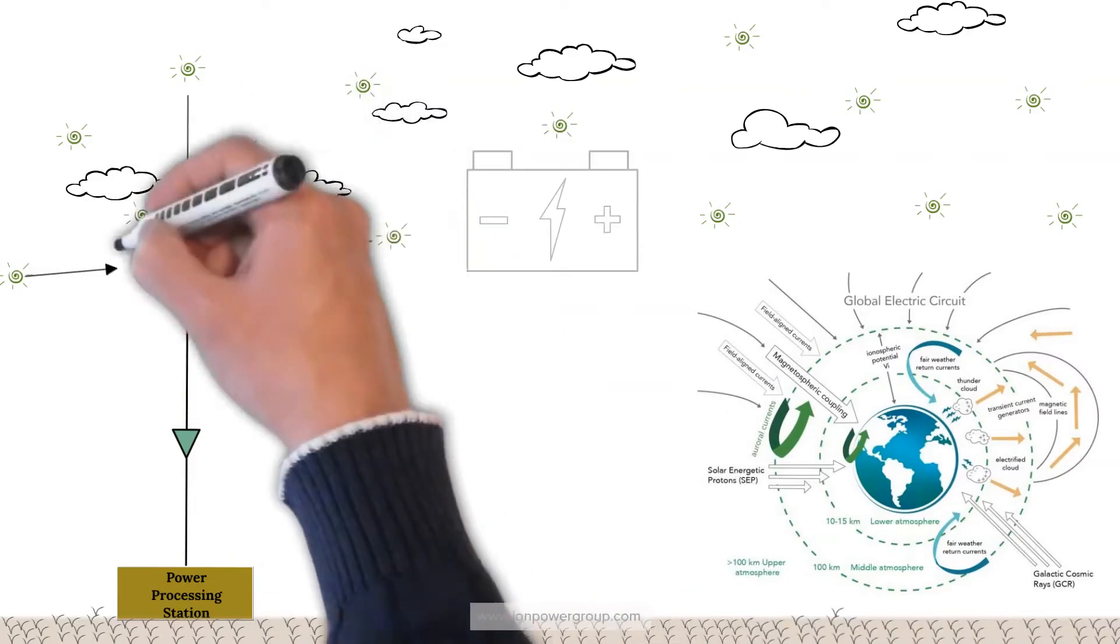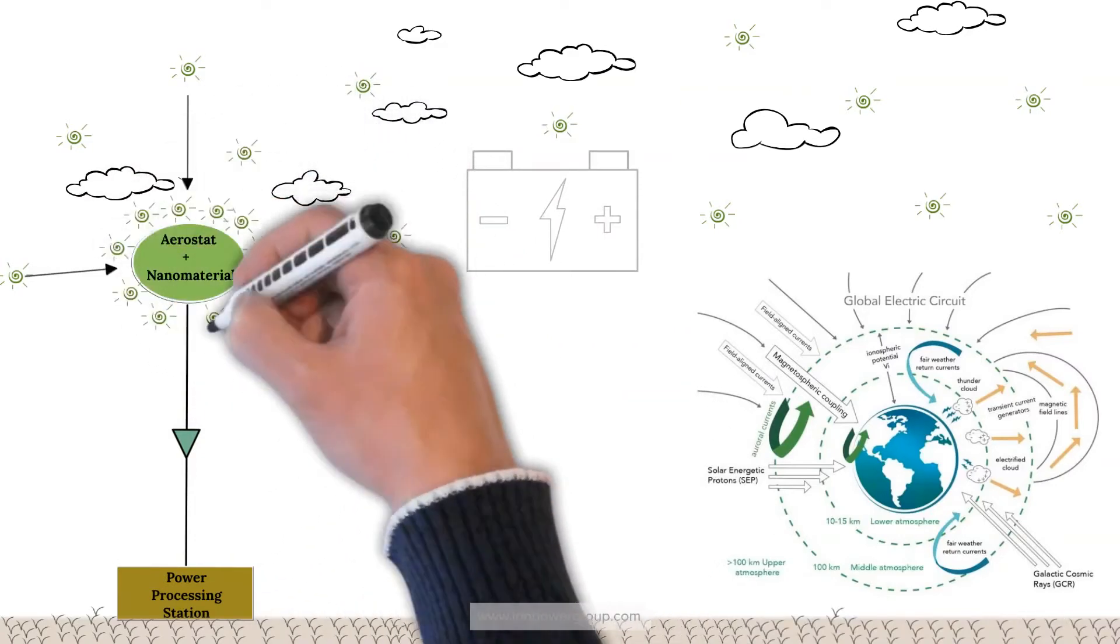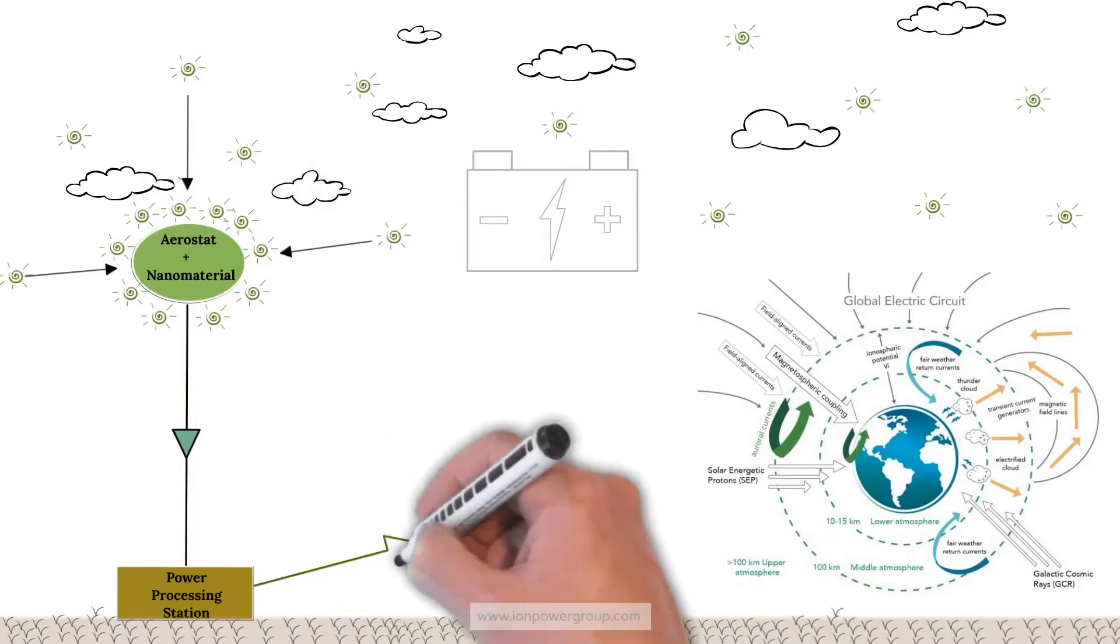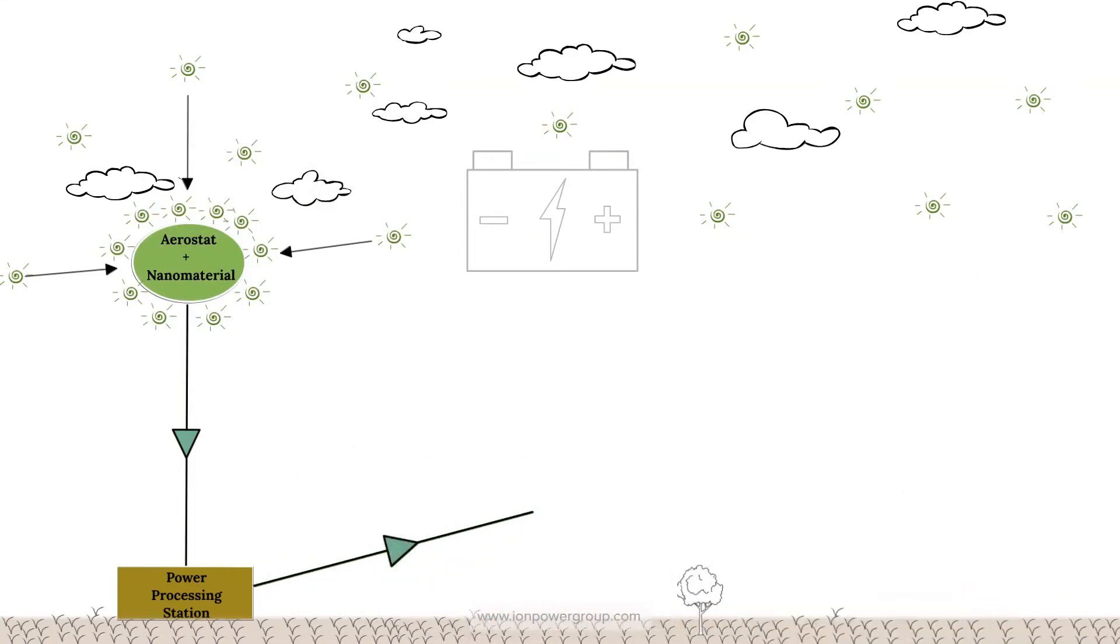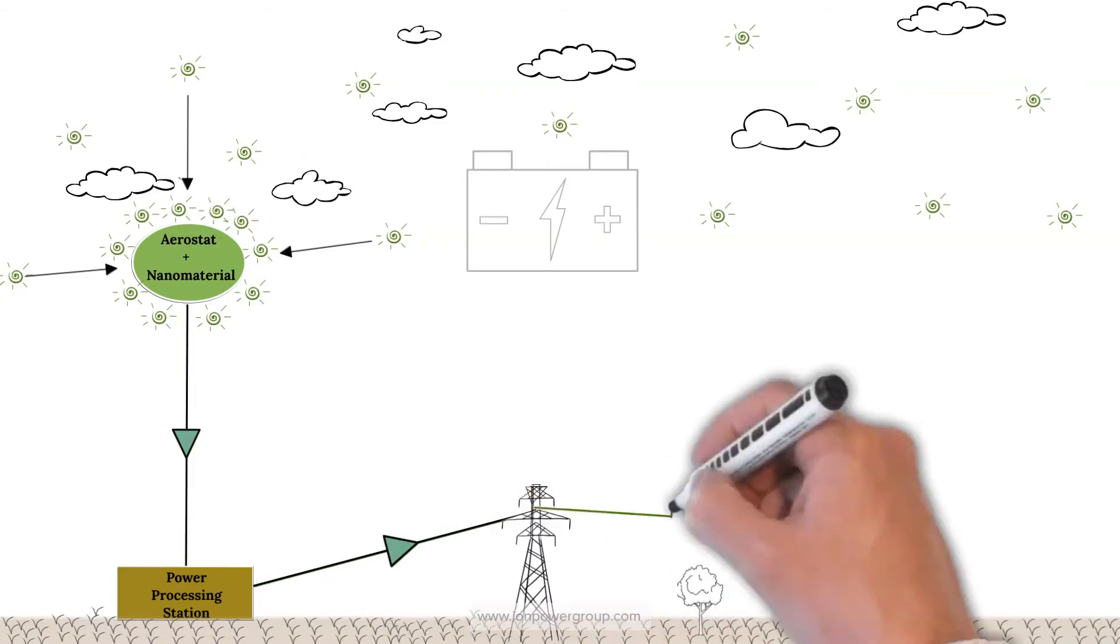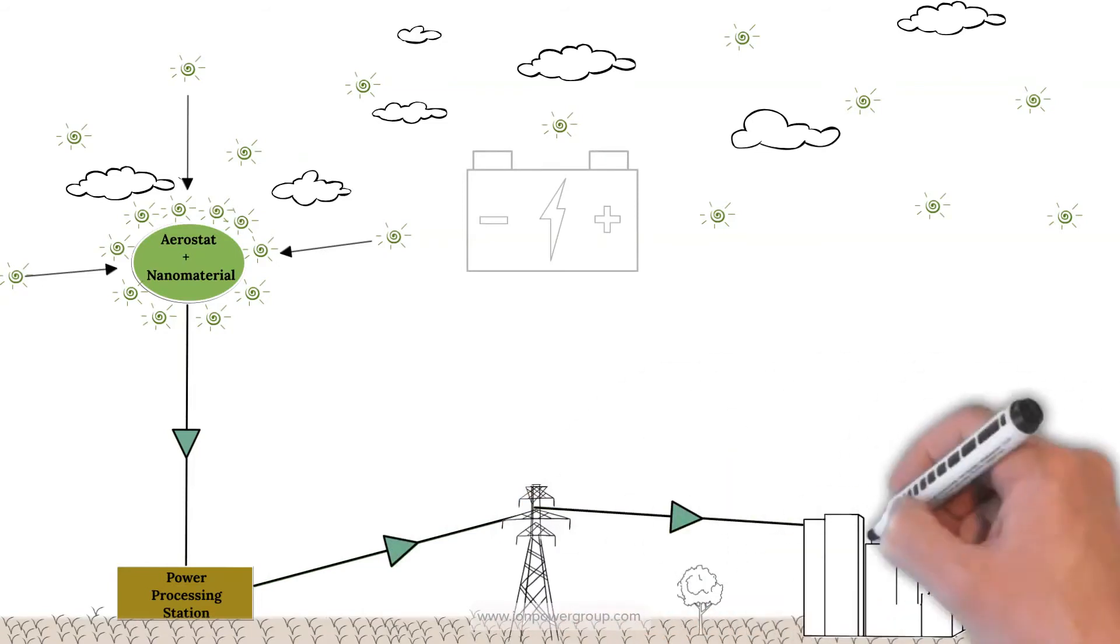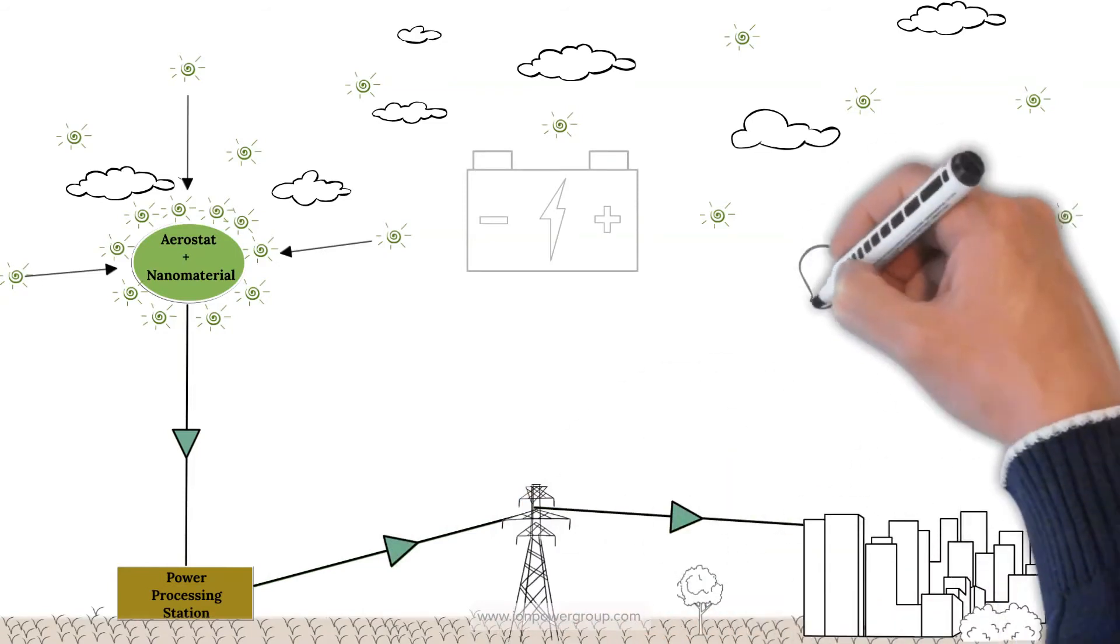Trillions of electrically charged ions electrocouple to our patented nanomaterial that absorbs high voltage electricity that is then conveyed down a conductive tether to the ground where it can be processed and used for many future purposes.